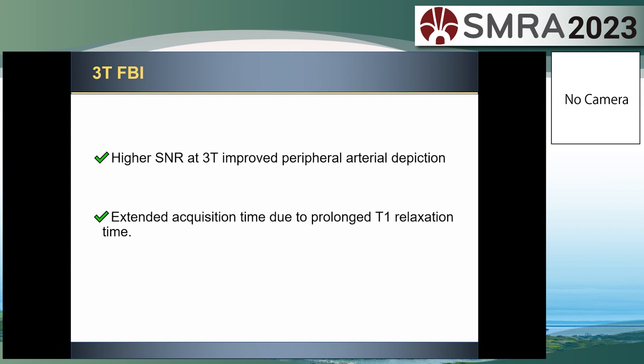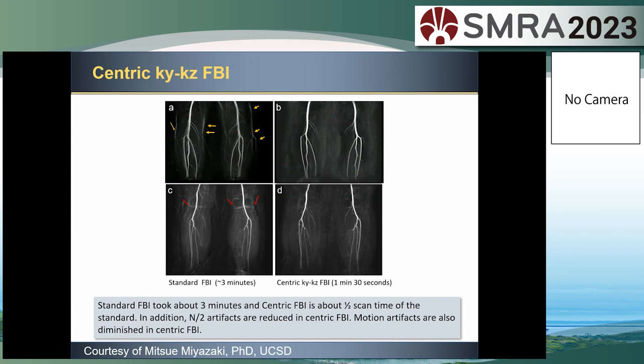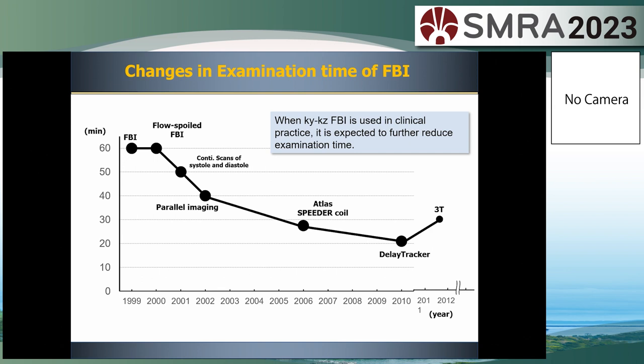However, acquisition time is extended at 3T due to prolonged T1 relaxation time. So a new technique, Centric KY-KZ FBI, has been developed to further reduce acquisition time. Standard FBI took about three minutes, and Centric FBI takes about half the scan time of the standard. In addition, N/2 ghosting artifacts are reduced in Centric FBI, and motion artifacts are also diminished. When Centric KY-KZ FBI is used in clinical practice, it is expected to further reduce examination time.